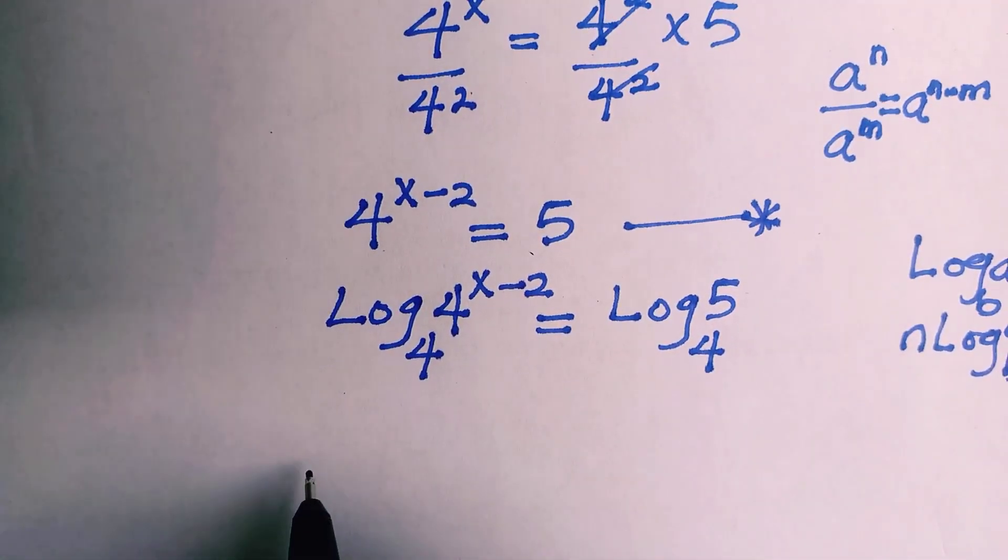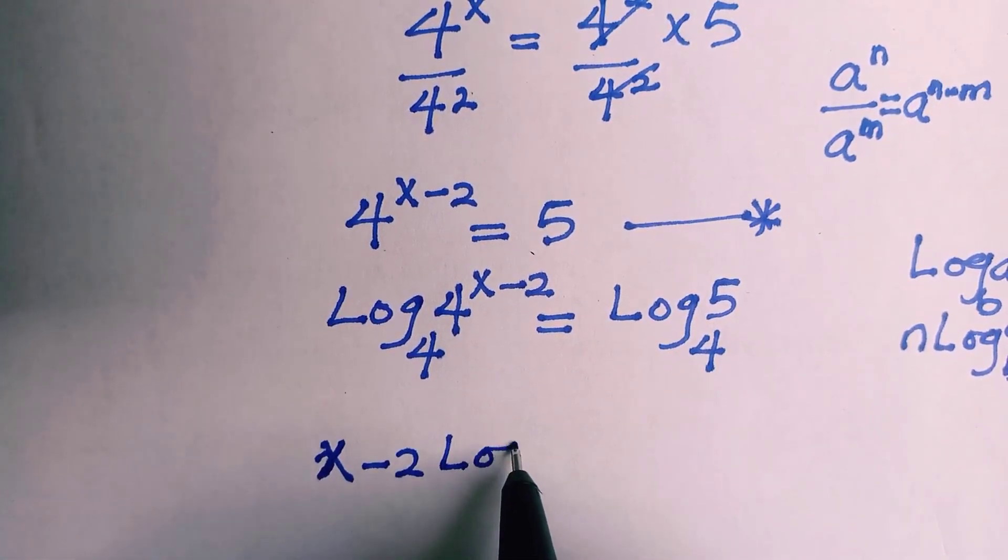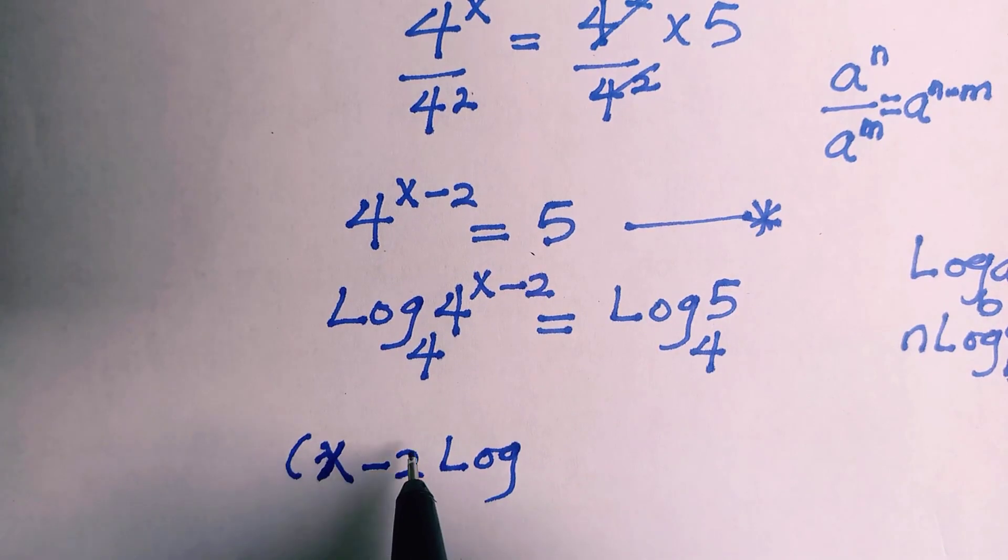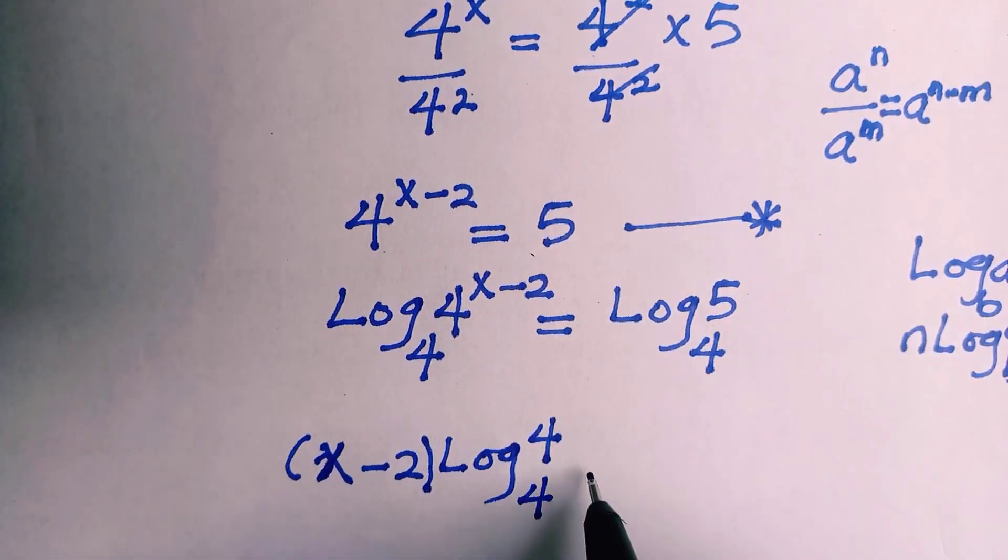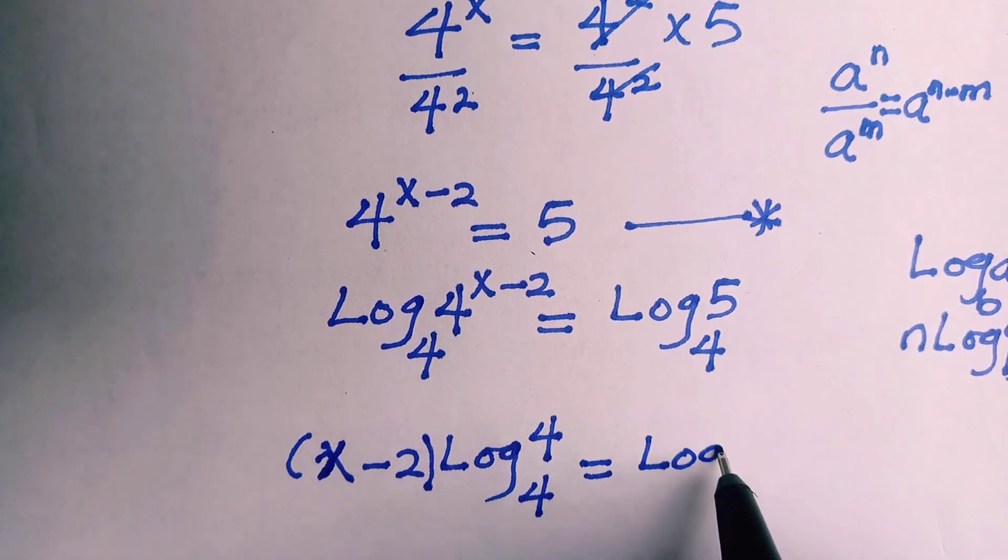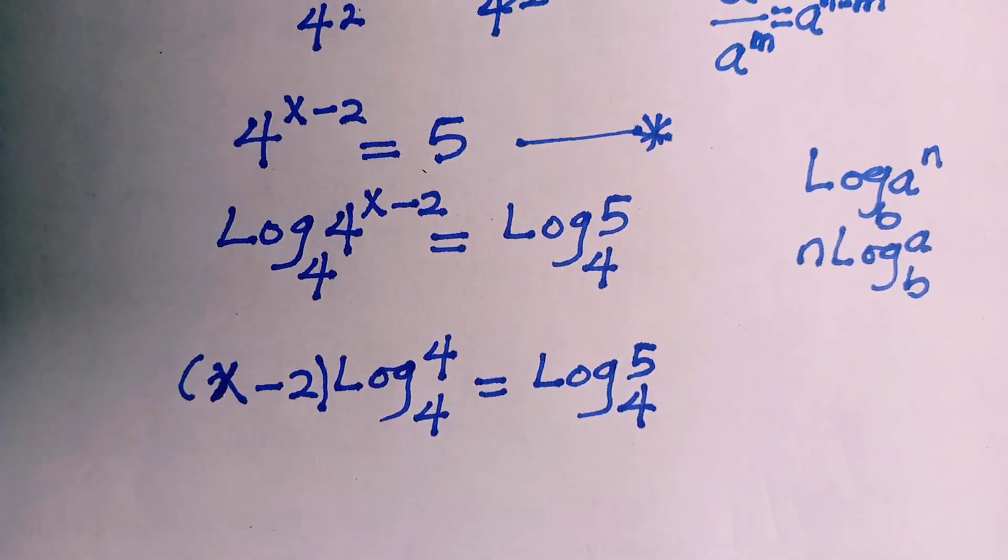So we are going to apply it here as well. So we drop x minus 2 down. Let's put this in brackets to avoid confusion and we have log 4 base 4 equals log 5 base 4.